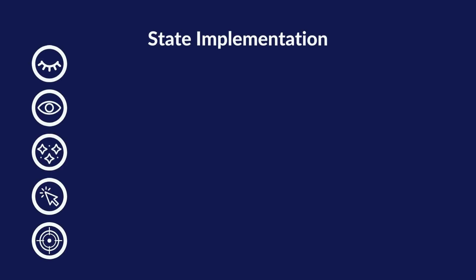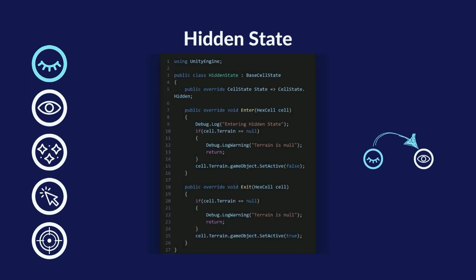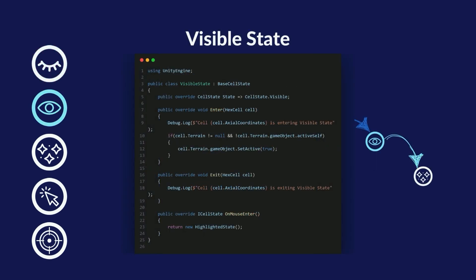Now we can have a look at the concrete implementations of different states. At the most basic we have the hidden state — this just implements the getter which returns hidden, and on entering the state we hide the game object if it exists, and on exit we activate it again. The transitions for this one are currently not defined and will be implemented when we can move from tile to tile. The visible state looks similar but makes sure the terrain is active and doesn't do anything on exit. It does implement a transition on mouse enter, which will transition the hex cell into the highlighted state.